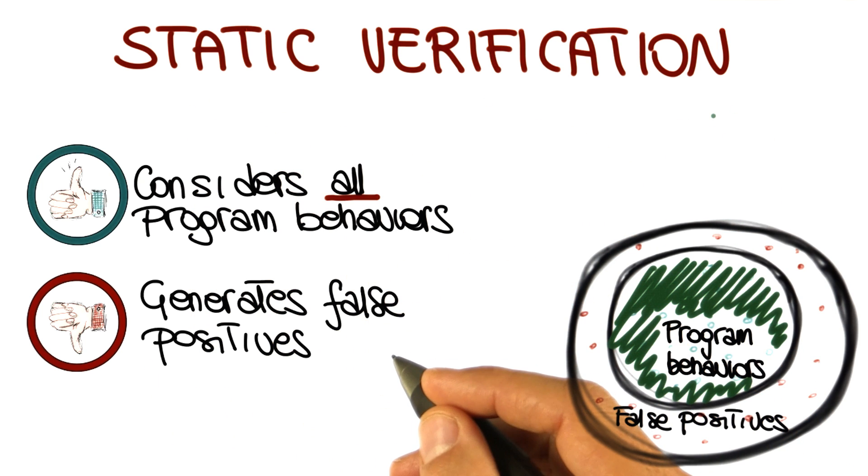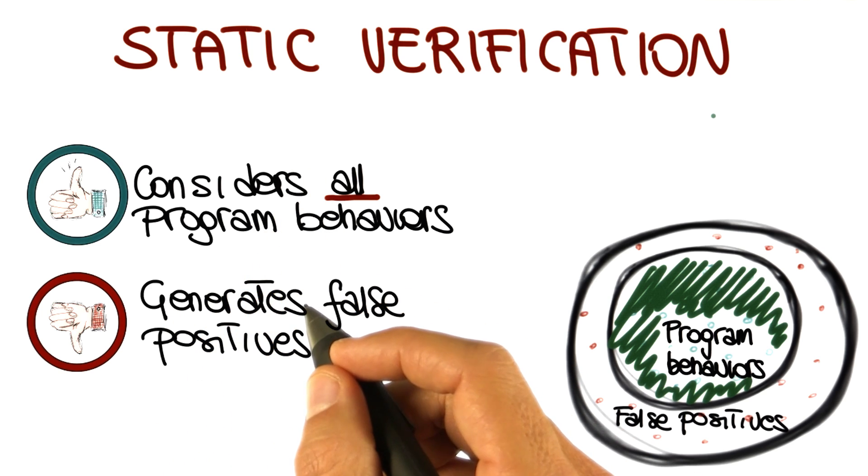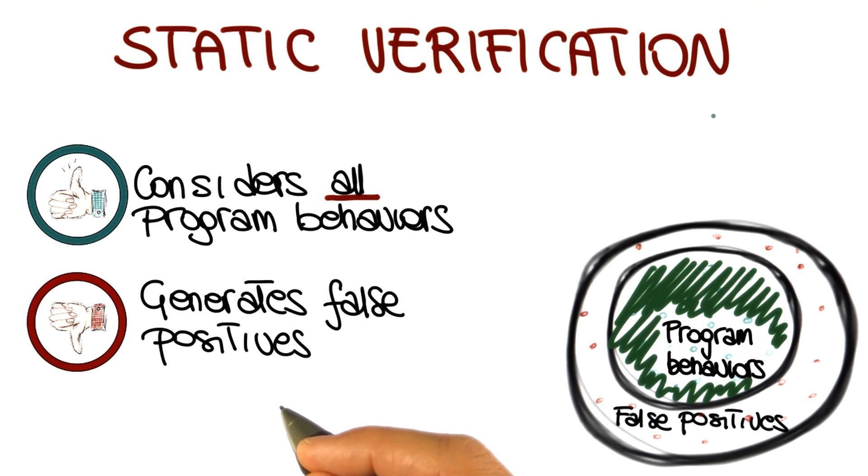As we will further discuss later in the class, static verification can generate results that are not true. For example, it might report a possible null pointer dereference that cannot actually occur in practice.